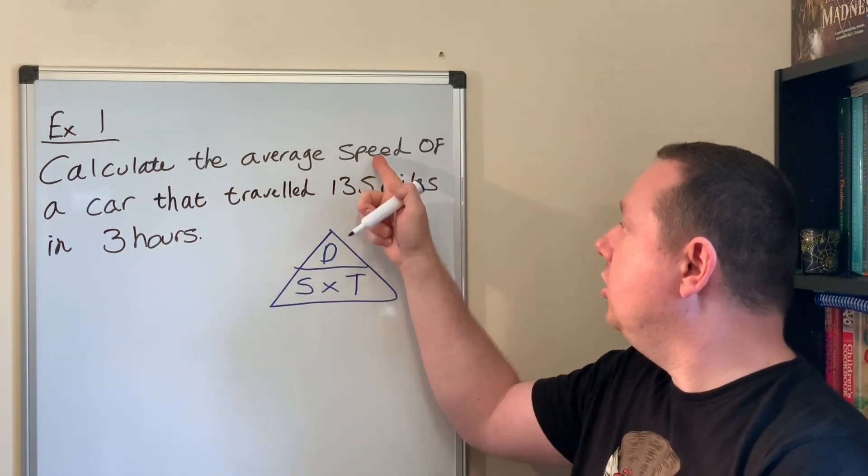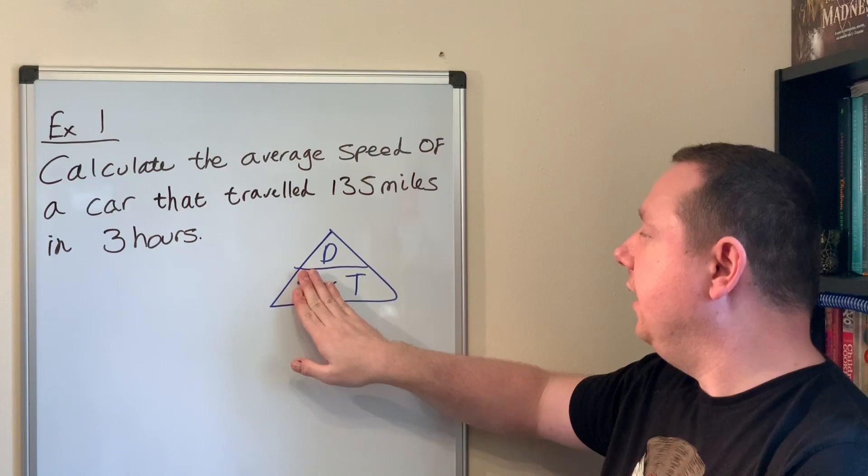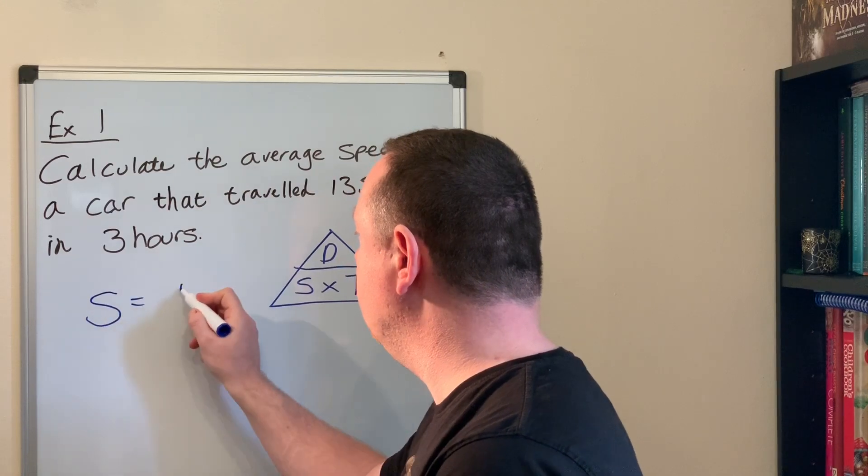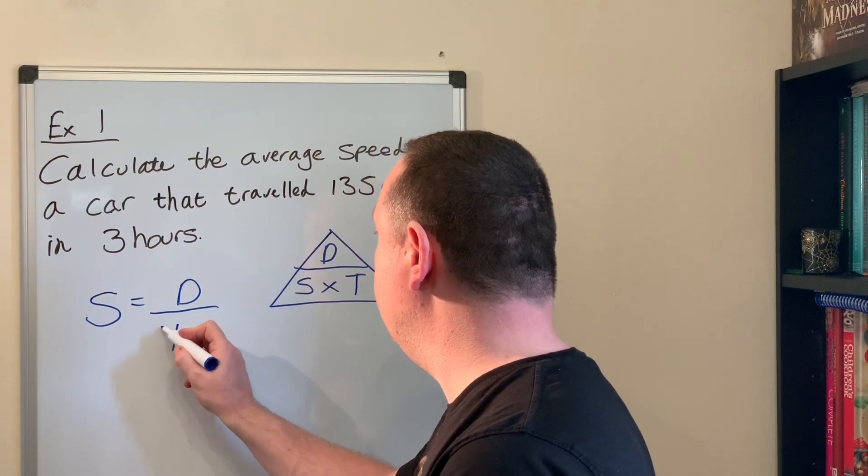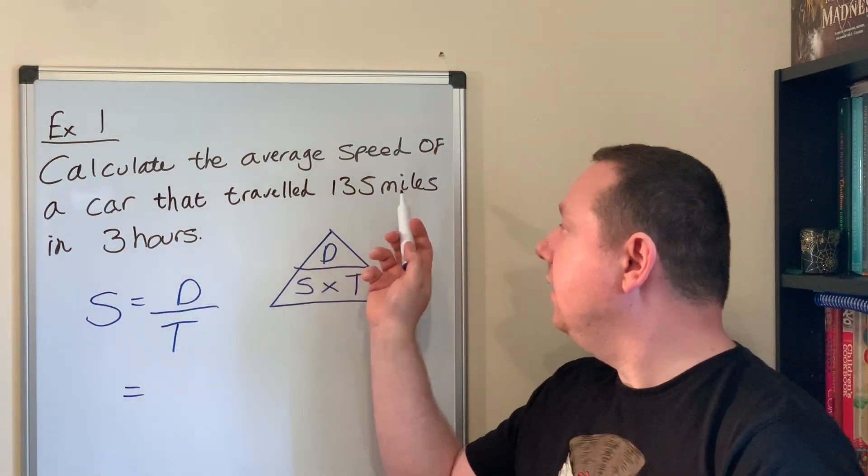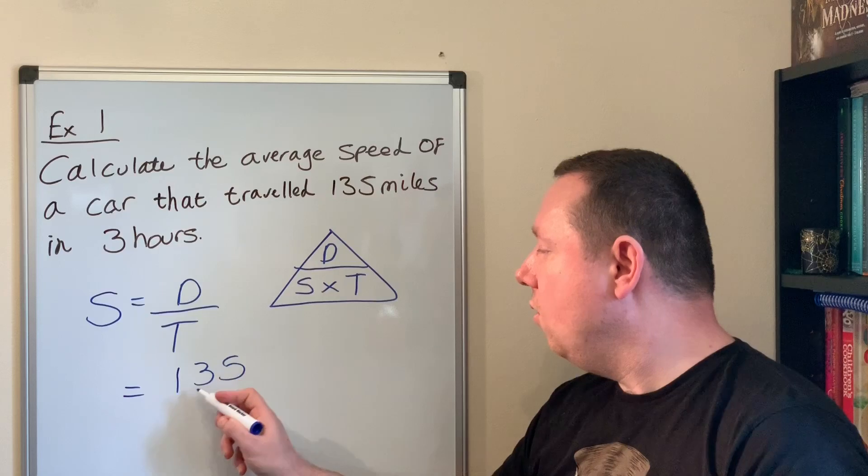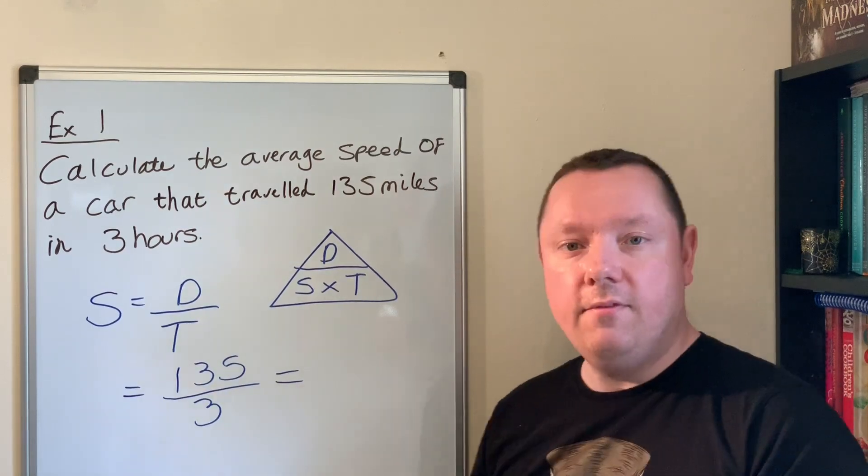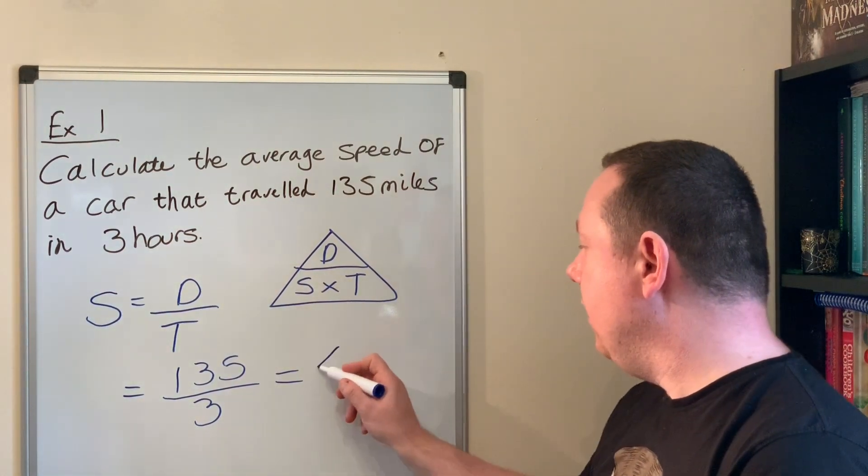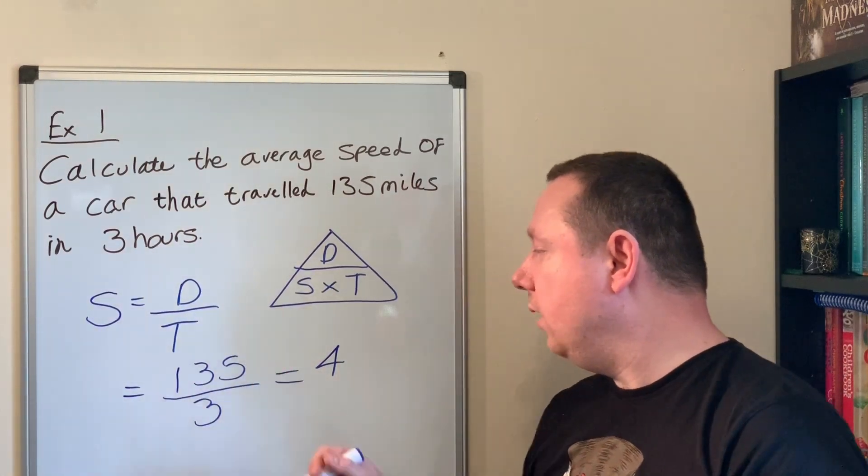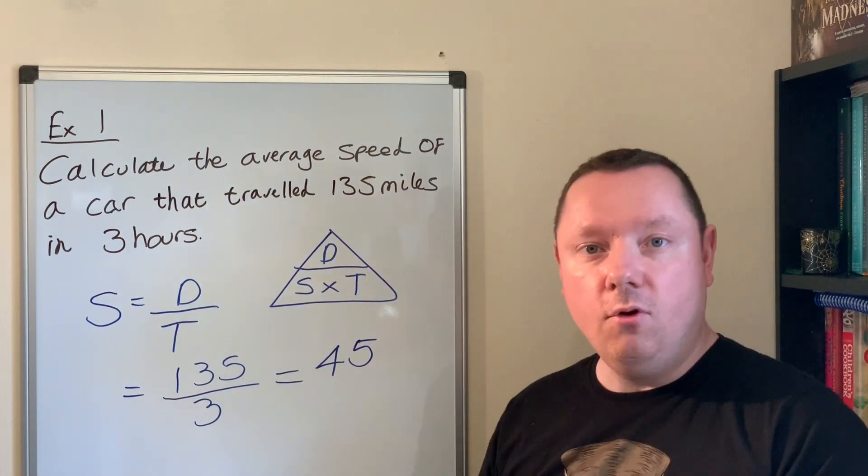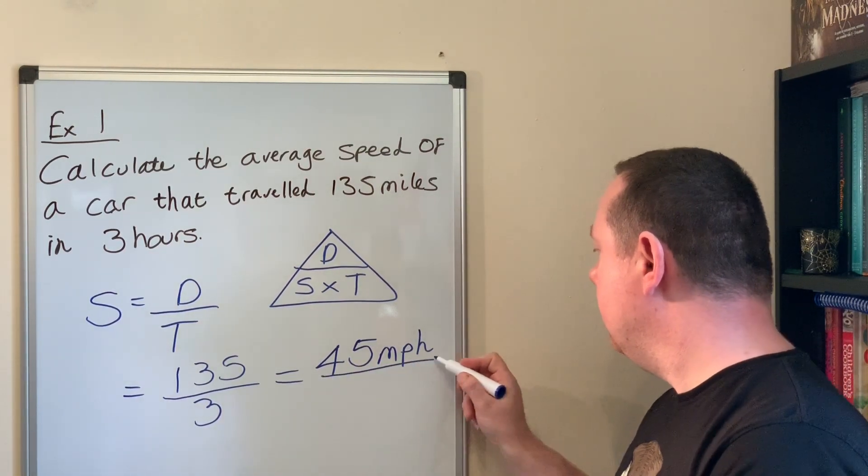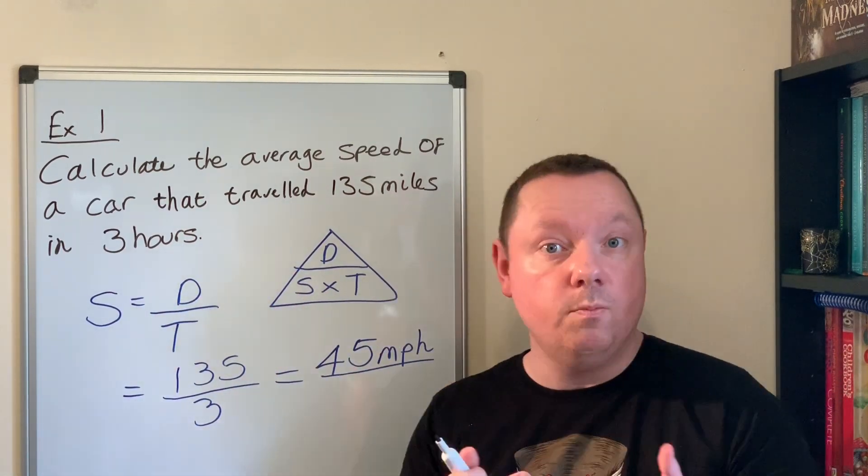I'm calculating speed, so I cover speed up and it shows D over T. So S equals D over T. The distance is 135, so that's 135 over 3 because the time is 3 hours. 135 divided by 3 equals 45 miles per hour.